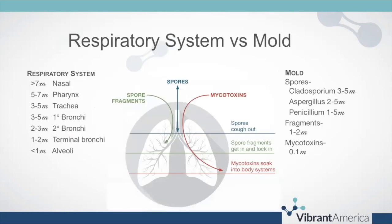Looking at our respiratory system versus mold: spores can only get so far, fragments can get a little deeper. Mycotoxins are ultra-small — 50 times smaller than the smallest spore. They can go right through the alveoli into the bloodstream, and that's how people get sick from mycotoxins. Our alveoli are about one micron; mycotoxins are 0.1. That's why we don't have defenses against them — everybody's lungs are built the same, and everyone can absorb these mycotoxins.